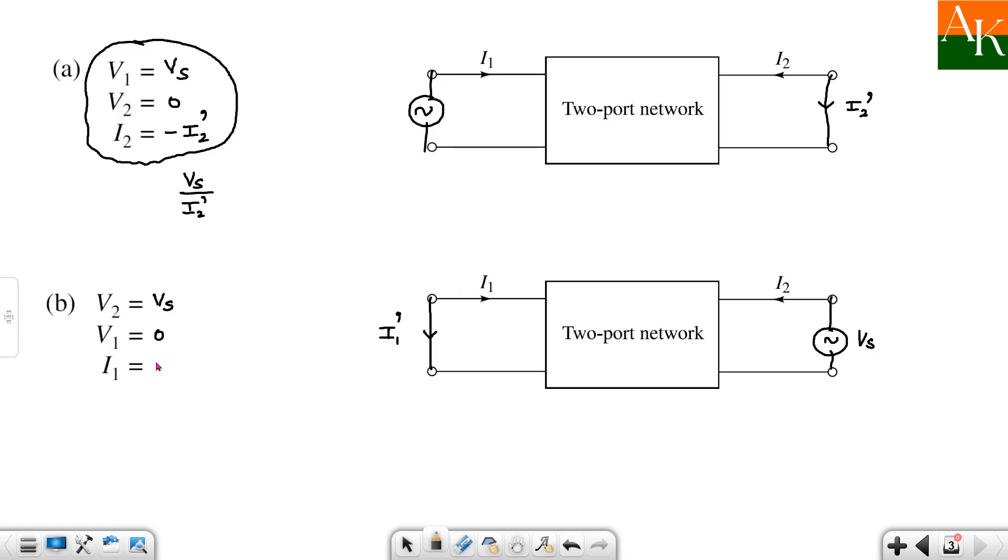Here we get a response which we call I1 dash. From the diagram, clearly I1 and I1 dash are opposite to each other, so I1 is substituted as negative I1 dash. We substitute these three values in the equation of two-port parameters and calculate the ratio of Vs by I1 dash.